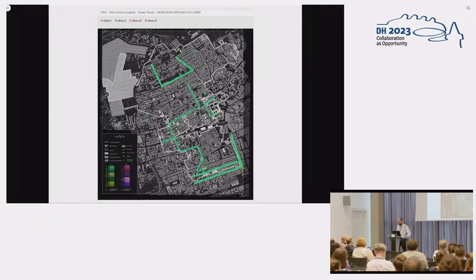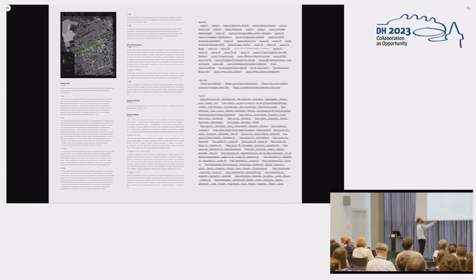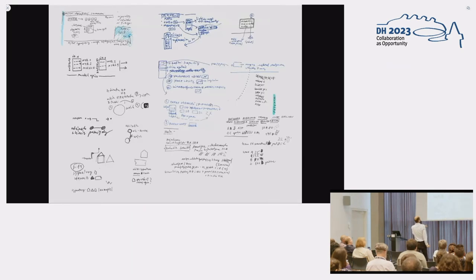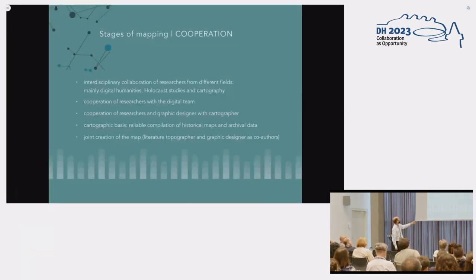We are also working with the cartographer on how to display data with signatures, and we hope to show it to you during the second stage. Here you have a combination of the map with text, and here is an example of collaboration — the graphic designer and cartographer working on signatures and how to present them.